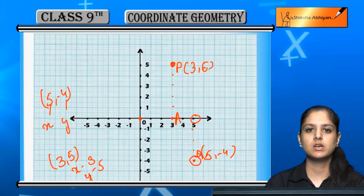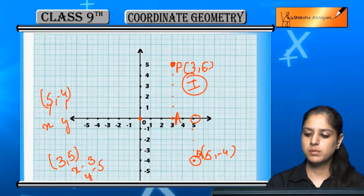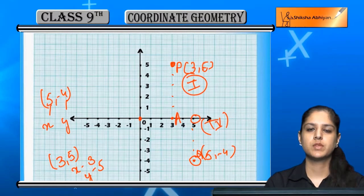This is the first quadrant, this is the fourth quadrant. So we plot points in this way.